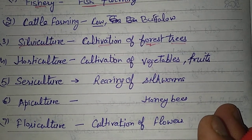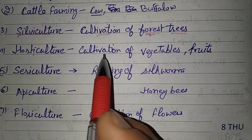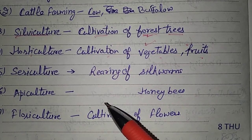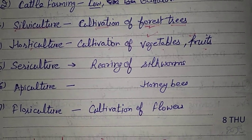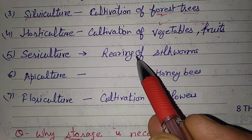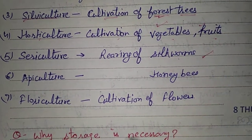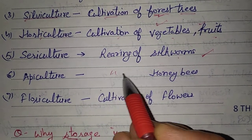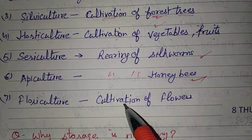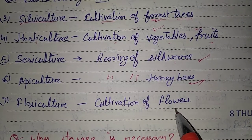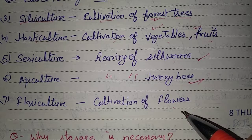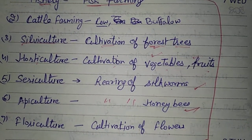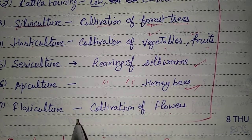Horticulture — cultivation of vegetables and fruits — you can also do farming of fruits and vegetables. Sericulture — rearing of silk worms. Apiculture — that is the rearing of honey bees — honey bees can be kept. Floriculture — it is the cultivation of flowers. In this way, through different activities, you can add to your income. Even mushrooms can be grown.